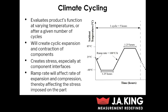The next type of testing is climate cycling. This can be used to evaluate a product's function at varying temperatures — you might want to see how your product operates at both the high and low temperatures. Or it can be used to evaluate a product's function after a given number of cycles to see the more permanent degradation that can happen because of climate cycling. As we touched on before, this creates a cyclic expansion and contraction, which creates stresses in your components, especially at those component interfaces. And keep in mind that the ramp rate is going to affect the rate of expansion and contraction, so that is going to affect the stress imposed on the part as well.